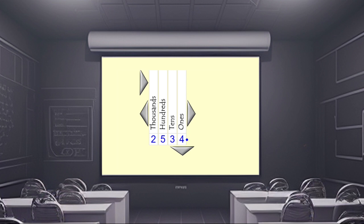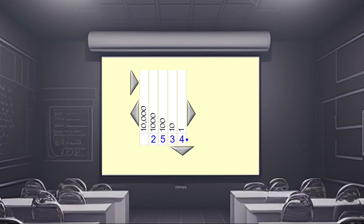Now those aren't the only column headings, because if we have a slightly bigger number, the next column heading is ten thousands. If I turn these into numbers, you can see that each of the column headings is ten times bigger than the column heading to the right of it. Starting with one, multiply by ten gives you the second column heading working from right to left. Then multiply by ten again gives you a hundred, then a thousand, then ten thousand. So they're each powers of ten.